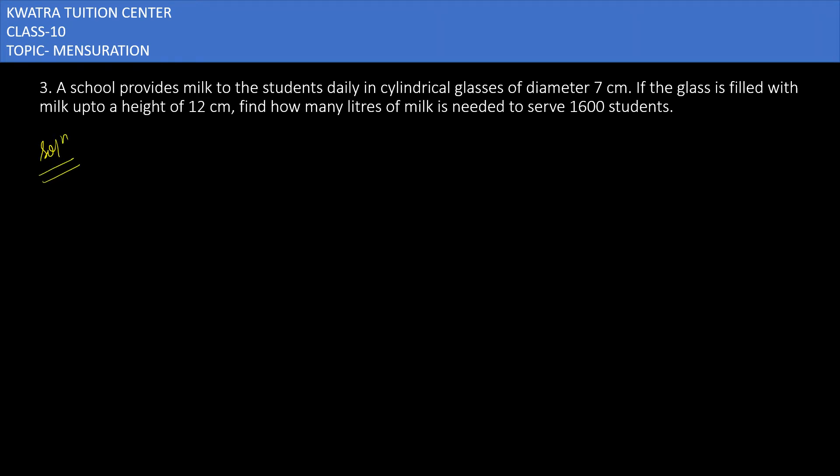Question number three says: A school provides milk to students daily in cylindrical glasses of diameter 7 centimeters. The glass is filled up to a height of 12 centimeters. Find how many liters of milk is needed to serve 1600 students.